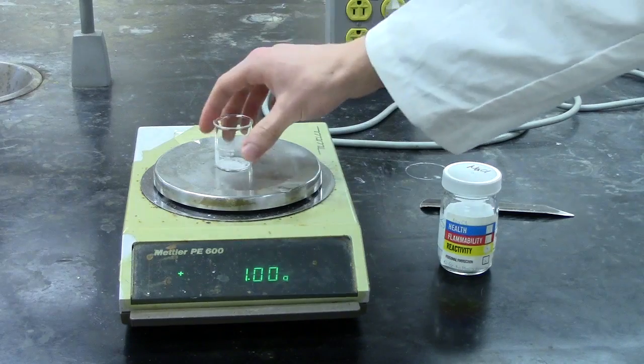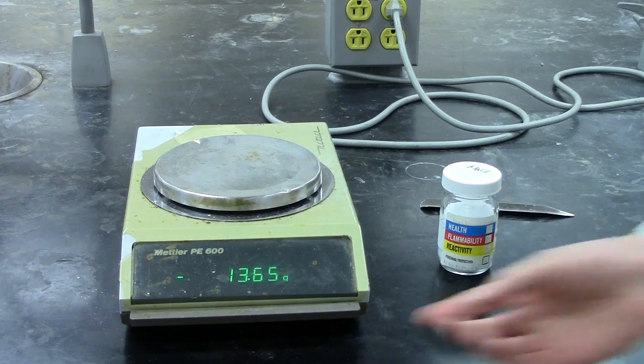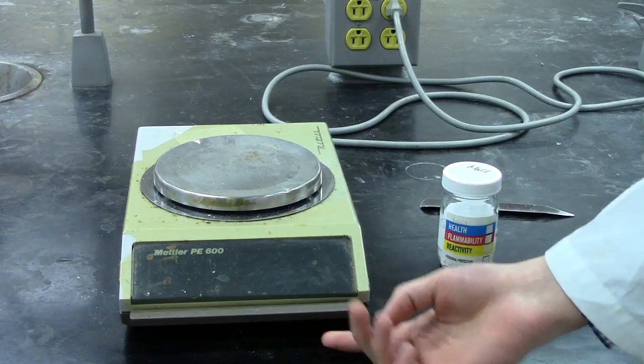Once you have your mass you can take your weighed substance and turn off the balance by lifting up on the lower bar.